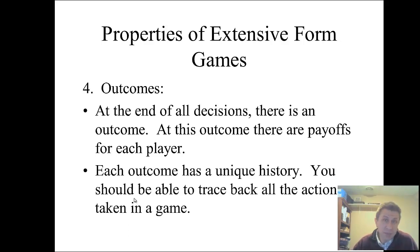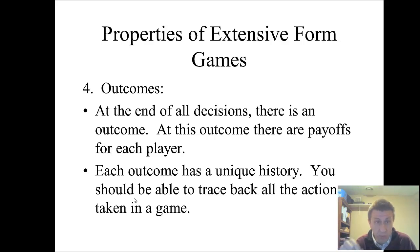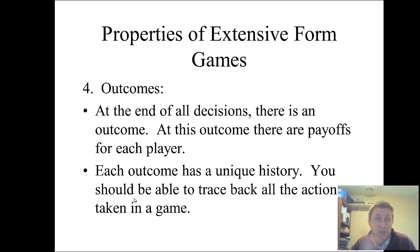With extensive form games, each outcome has to have a unique history so you can trace back the actions. When we go through these games, we'll be doing what's called the subgame perfect Nash equilibrium, or the rollback equilibrium depending on which textbook you're reading — they mean the same thing. We'll study what we expect to happen in a game by working backwards all the way to the beginning, so from each outcome you can trace back the unique history.